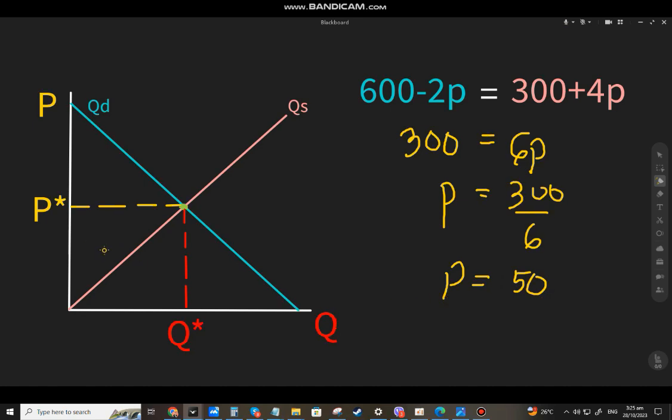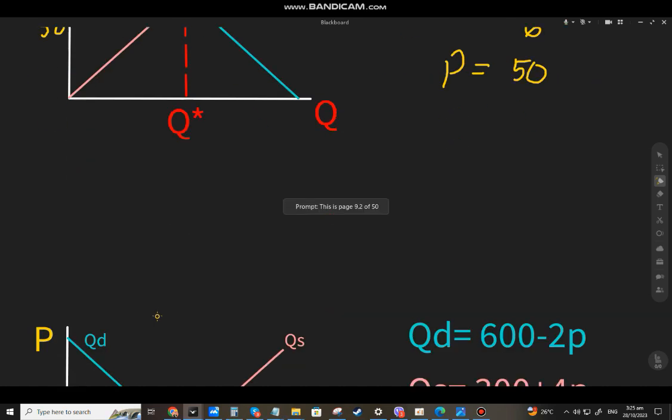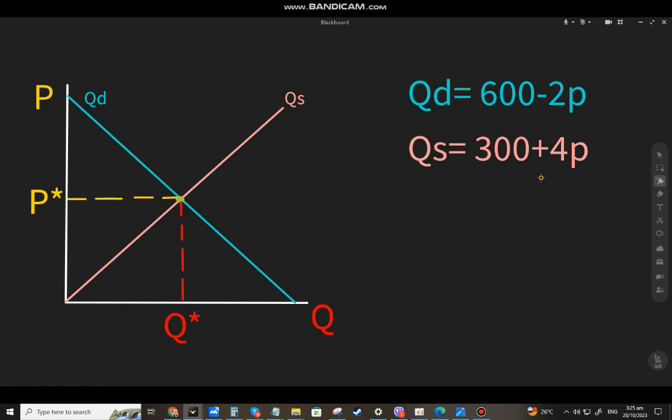Now that we have P star equals 50, how do we find Q star? Since we know P equals 50, we can substitute 50 into either equation, Qd or Qs, and we'll get the same answer. Let me show you. Let's start with Qd.